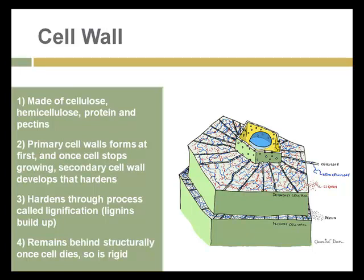The cell wall — depending on whether the plant is woody or fleshy — is made up of cellulose, hemicellulose, protein, and pectins. This picture shows a woody plant cell wall with a very thick layer of lignin, the material that gives trees their structure surrounding the cell. The primary and secondary cell walls surround the rest of the cytoplasm. Even after the living part of the cell dies, the cell wall structure remains and provides structure for the tree.